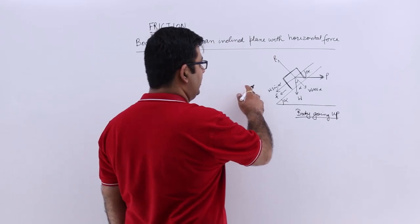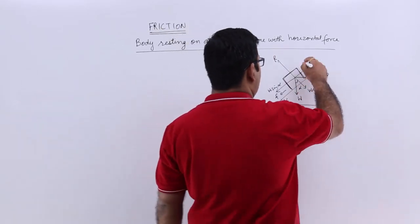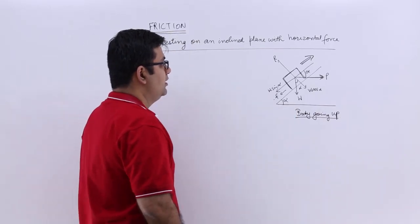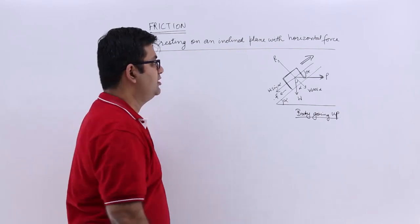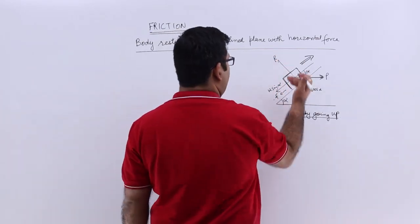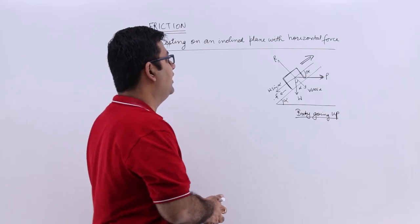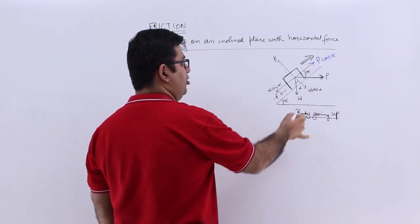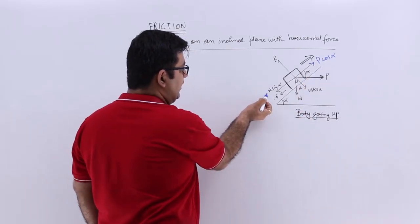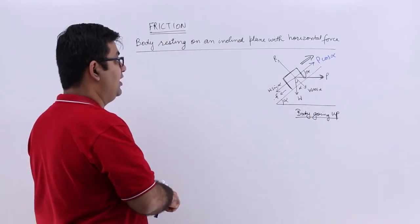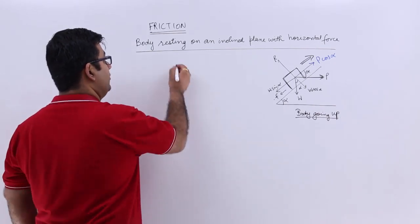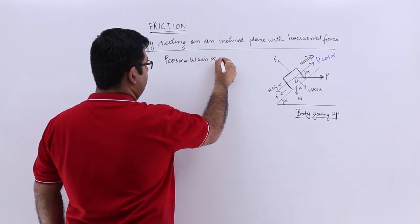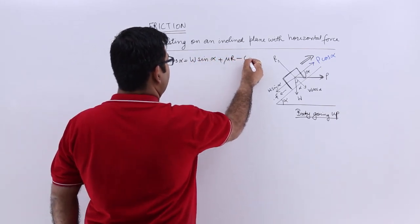The rest of the denominations are the same. The body is going up, so the motion is directed up the slope and friction acts in the opposite direction. Resolving forces along the plane: P cos alpha equals W sin alpha plus F, which is mu R.